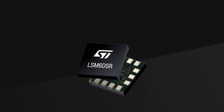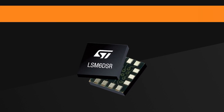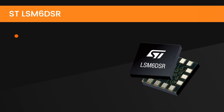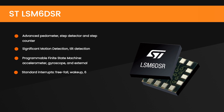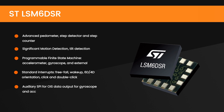An interesting part of the device is the LSM6DSR. This is an inertial measurement unit featuring a digital accelerometer and a digital gyroscope, which is used to compensate for head movements.